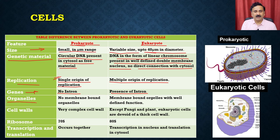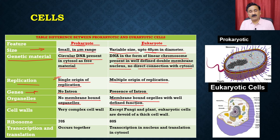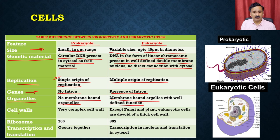Regarding organelles, there is no membrane-bound organelle present in the prokaryotic system, whereas membrane-bound organelles with well-defined functions are present in eukaryotes. You have different types of organelles — the nucleus, mitochondria, chloroplast, endoplasmic reticulum and so on — and all of these we are going to discuss in this particular module.